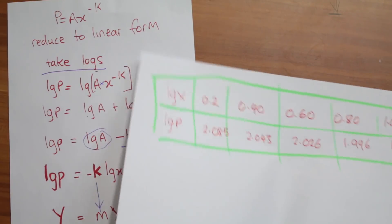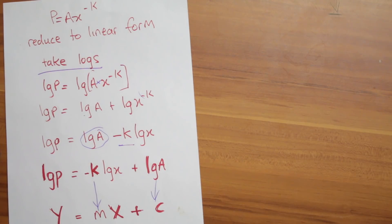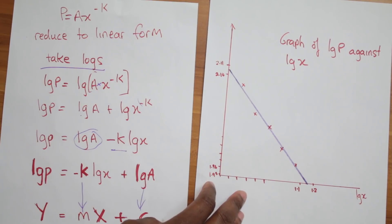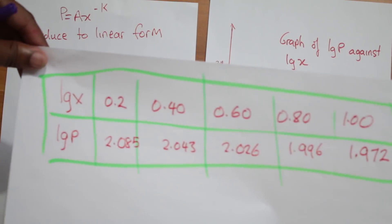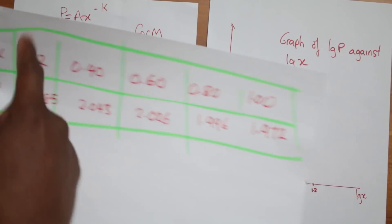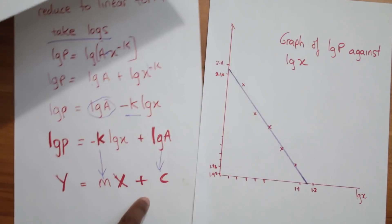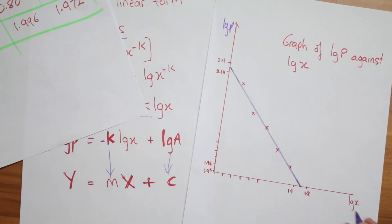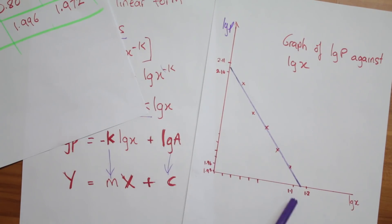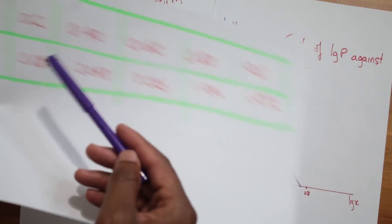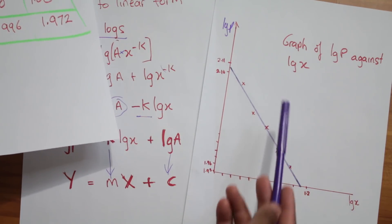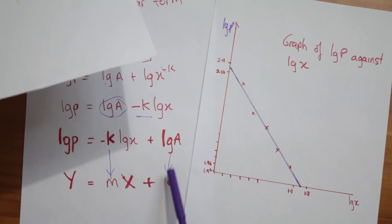Just put the values in your calculator — don't try to pull logs out of your mind. After you do that, plot your graph. I know this is a quick thing, but drop your scale nicely based on this table. Log of p is on the y-axis — write it as 'log p' — and log of x is on the x-axis. Then draw your line of best fit through those plotted points.